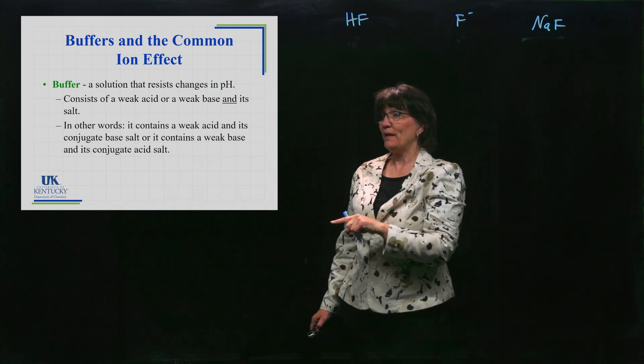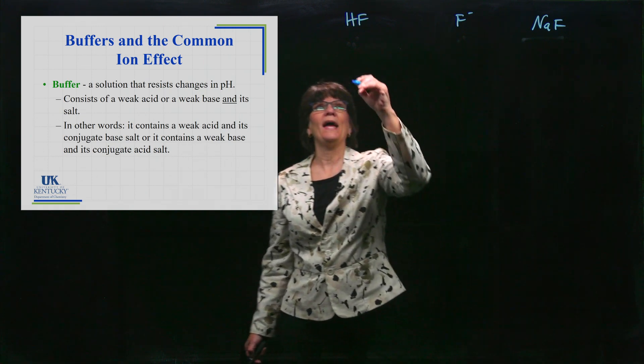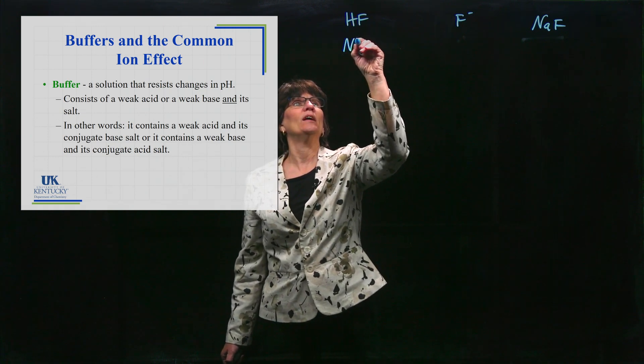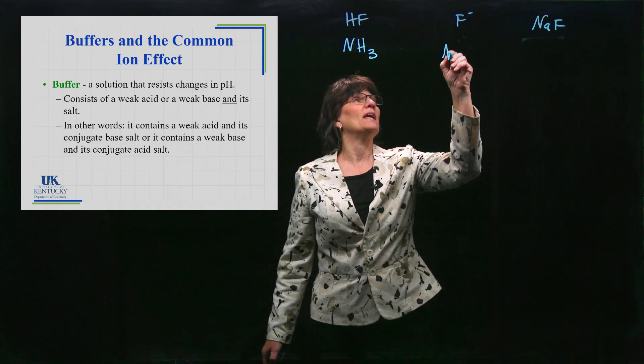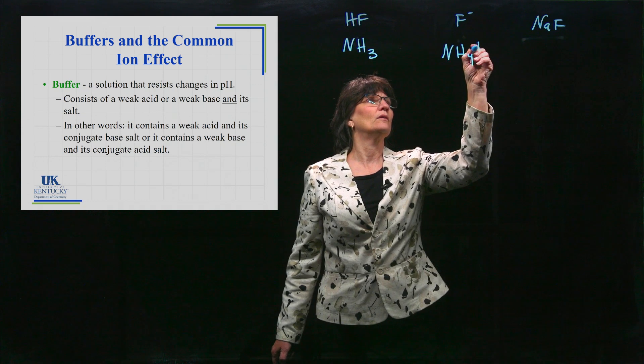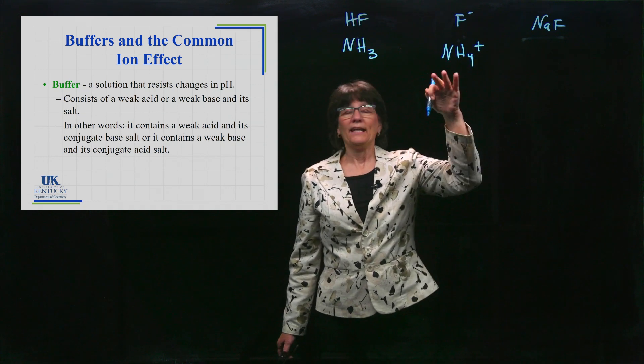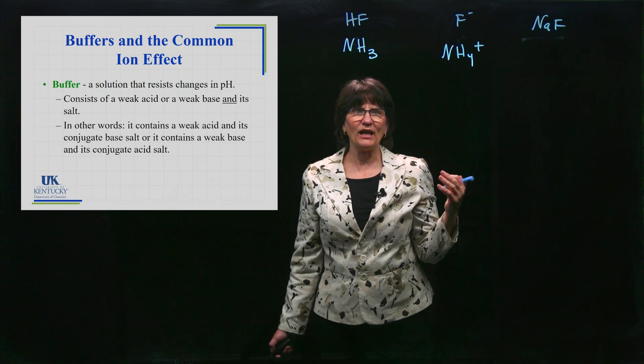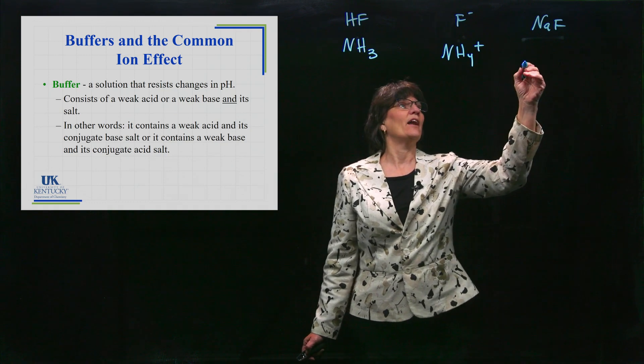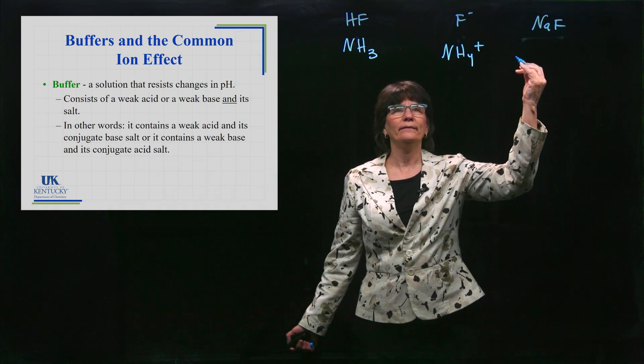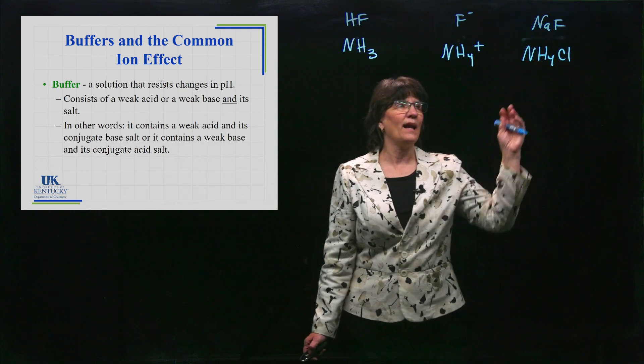Or it could be a weak base and its conjugate acid salt. Here is a weak base: NH3. What would its conjugate acid be? It would be NH4 plus - it's different by adding the H plus to it. Again, you can't just go and find some NH4 pluses on the shelf to put into the solution. What you find is an ionic compound, so I need a chloride or some kind of anion to make it an ionic compound, and that I can pull off the shelf.